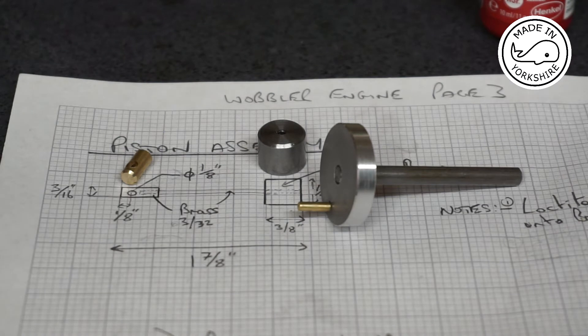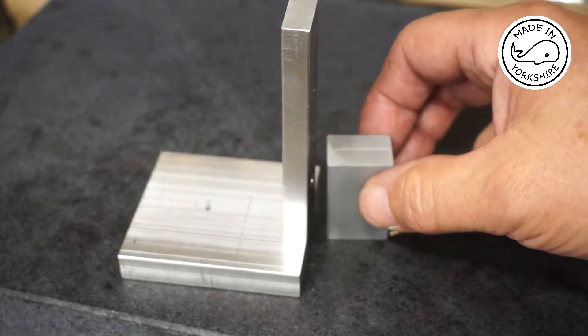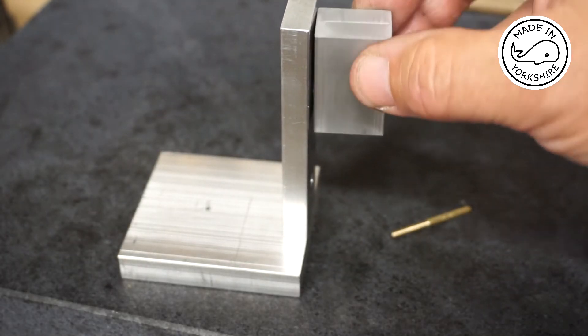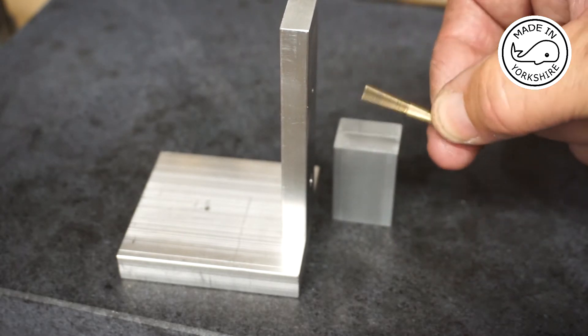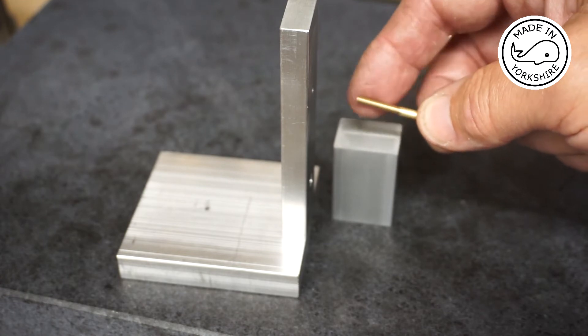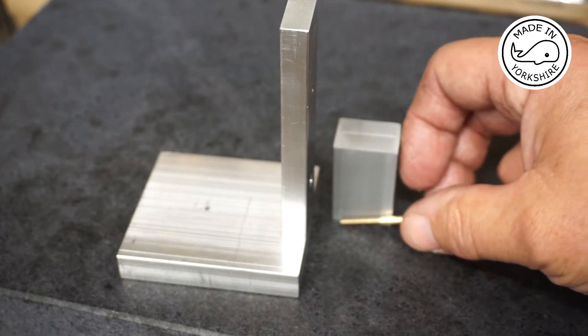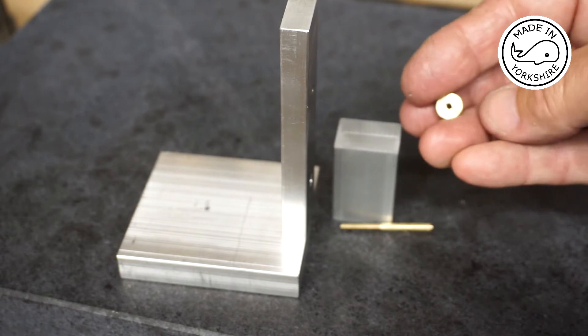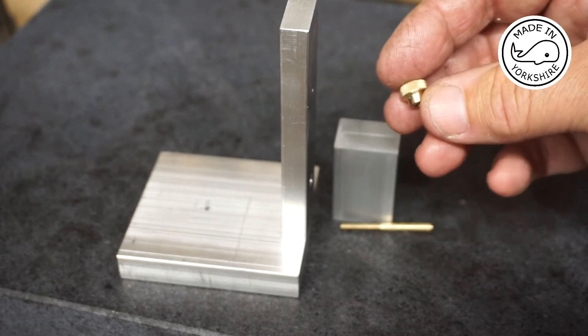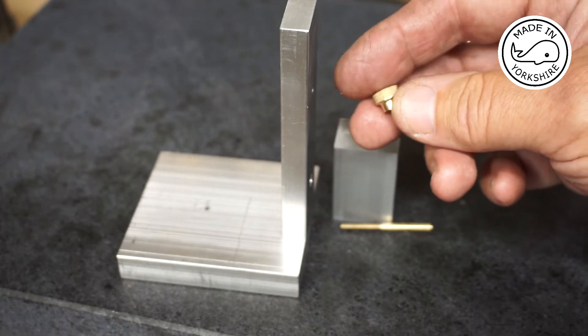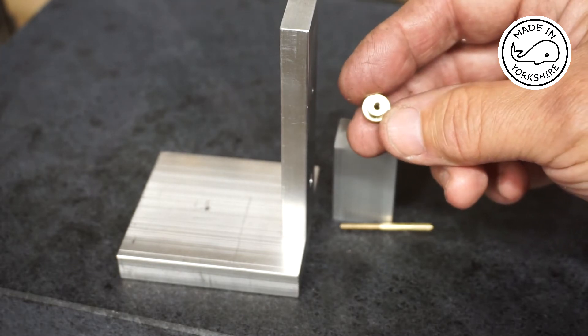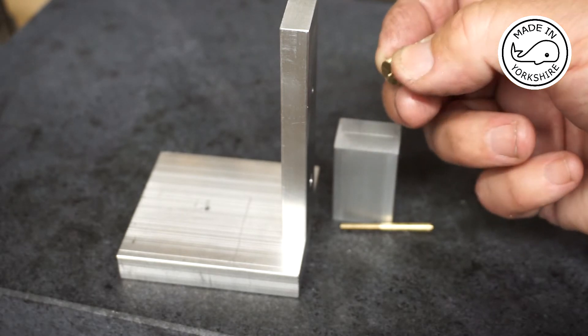You might remember on my first video I made the cylinder and the cylinder moves like that on the upright and that's the pin that holds it all together. Off camera I've just threaded that to an M3 thread and also off camera I've made this nut and I've knurled it using my new knurling tool. It's amazing what you can make on these little mini lathes.